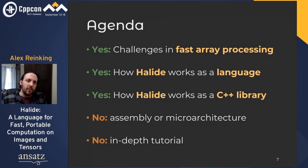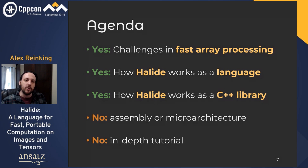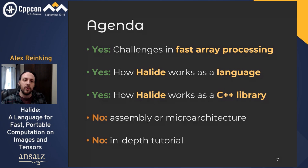Let me briefly summarize the rest of the talk. We'll discuss the main challenges in fast array processing — what matters for performance, what trade-offs we make, and how Halide helps you optimize for those factors. Then we'll talk about Halide's architecture and how it integrates into your programs and builds. We won't be diving deep into architecture-specific details or every feature; we only have an hour, so I want you to take away something that applies outside of Halide too. There will be a few times when I pause for questions — please ask them.